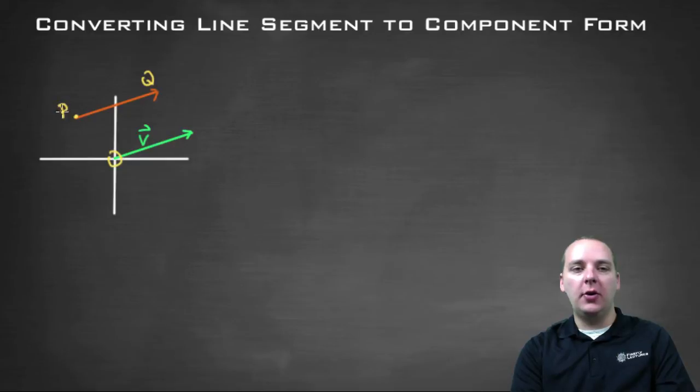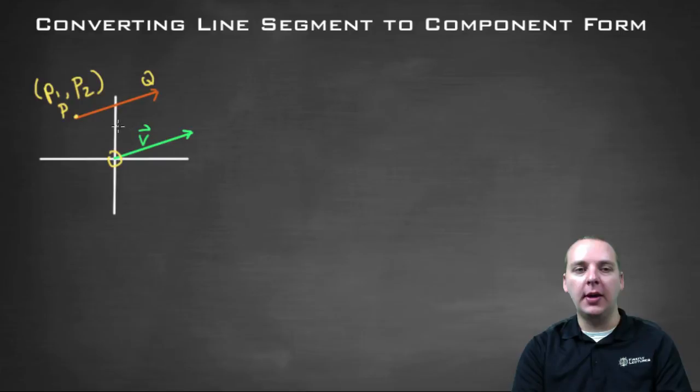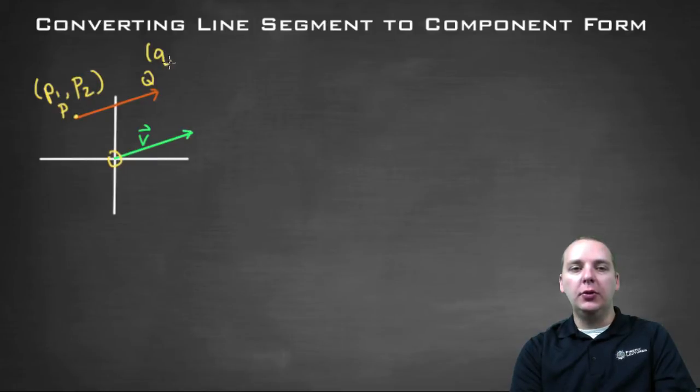For the line segment, let's call the initial point point P, let's write it as the ordered pair P sub one comma P sub two. So that's an X, Y ordered pair for the starting point or the initial point of the line segment. And we'll call the terminal point Q sub one comma Q sub two.